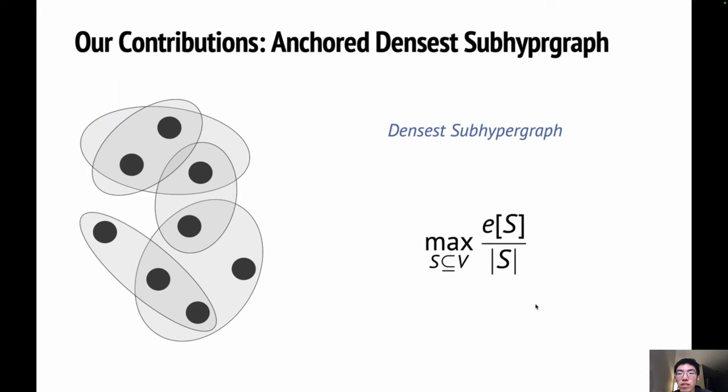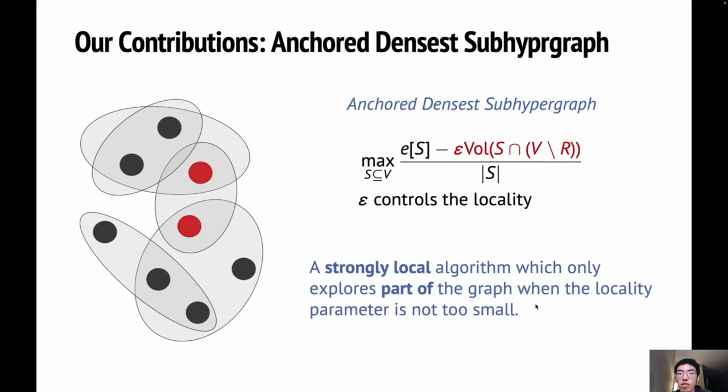Our main contributions are studying one localized densest subhypergraph problem, which we call anchored densest subhypergraph. We extend the ordinary densest subhypergraph problem of finding a vertex set maximizing the edge density on a hypergraph to a localized version. Specifically, we propose one objective, adding penalties on vertices outside the reference set R, and we control the extent of the penalty by one locality parameter epsilon.